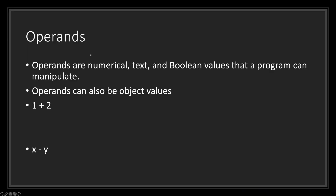What exactly are operands? Operands are numerical, text, and boolean values that a program can manipulate. Operands can also be object values. In this case, the operands are 1 and 2 along with the variables x and y.